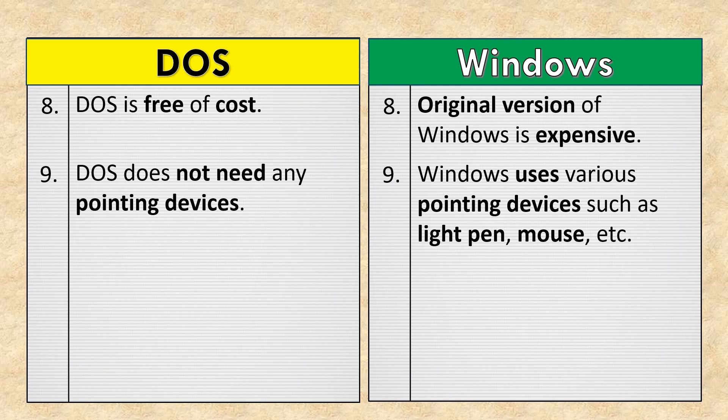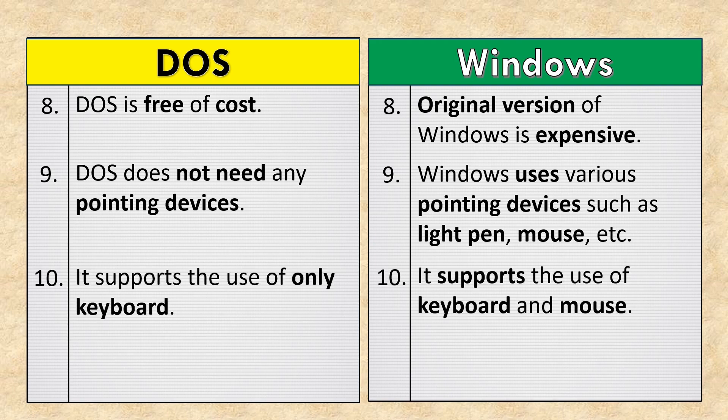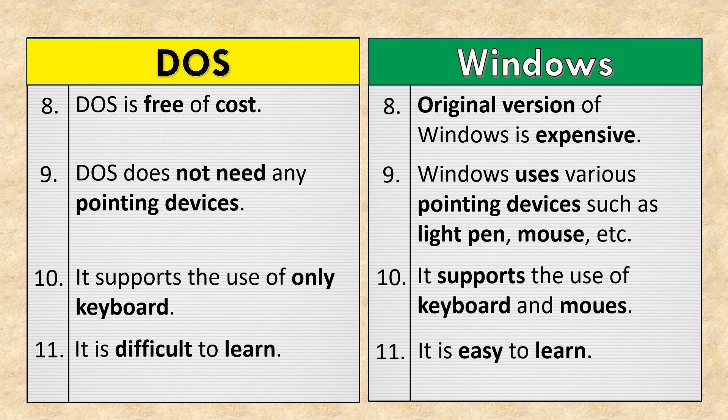DOS does not need any pointing devices, while Windows uses various pointing devices such as light pen, mouse, etc. DOS supports the use of only a keyboard, whereas Windows supports the use of both keyboard and mouse. DOS is difficult to learn, while Windows is easy to learn.